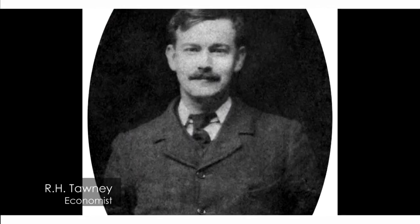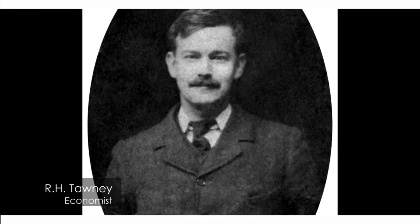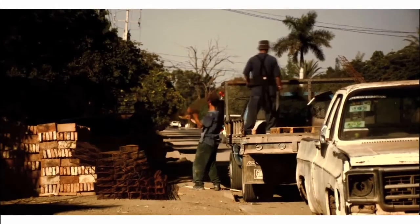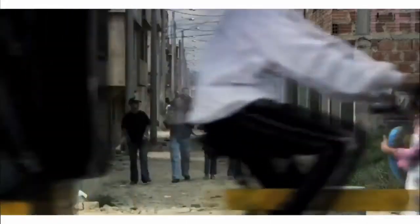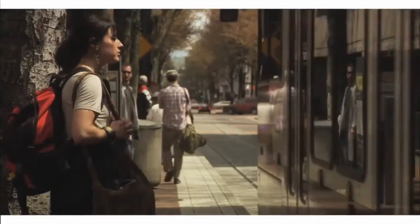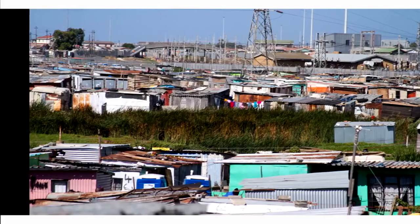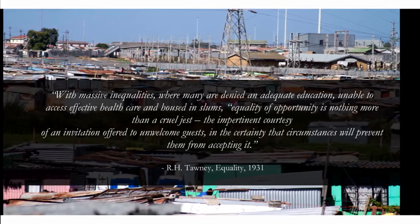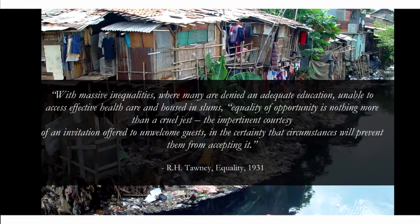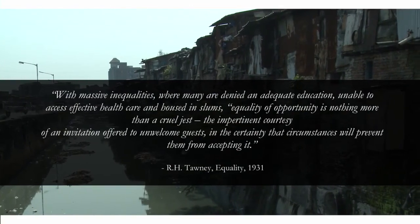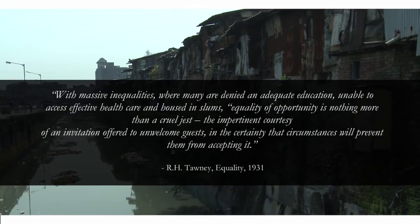R.H. Tawney, a clergyman economist in early 20th century England, remarked: 'What is required is not only an open road, but an equal start.' When we talk of equal opportunity, we forget that we have created sufficient disadvantages for some people who cannot make the same use of opportunity as those with previous advantages — you can't expect them to run the race at the same speed. Tawney remarked that with massive health inequalities, where many are denied adequate education, unable to access effective healthcare, and housed in slums, equality of opportunity is nothing more than a cruel jest — the impertinent courtesy of an invitation offered to unwelcome guests in the certainty that circumstances will prevent them from accepting it. He called it nothing more than decorous drapery.